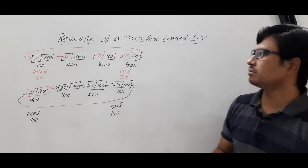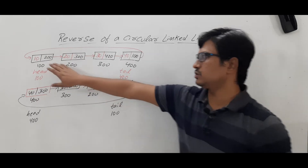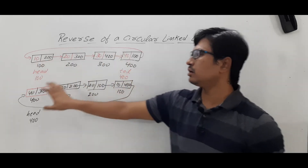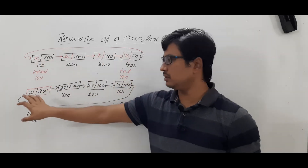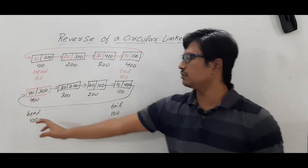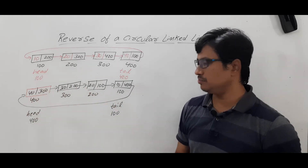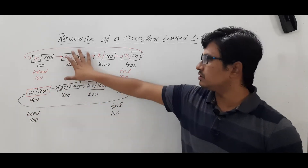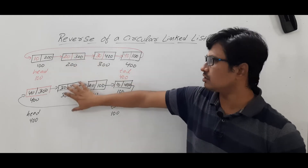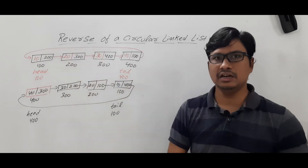So this is what the meaning of reverse: the first node should become the last node and the last node should become the first node, and then you should have the circularity — all other nodes follow the same principle. This is what the meaning of reversing the given circular linked list.